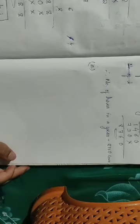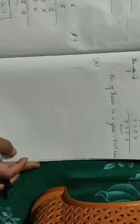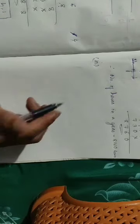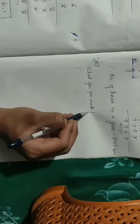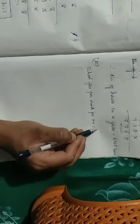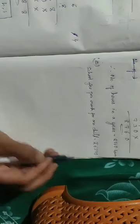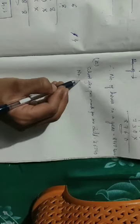Next, question number 3C. Amat has two children who go to the same school. He pays rupees 6,340 per month as school fees for each child. So the school fee per month for one child is rupees 6,340. But Amat has two children, so for one child he pays this much — but for two children, how much will he pay?